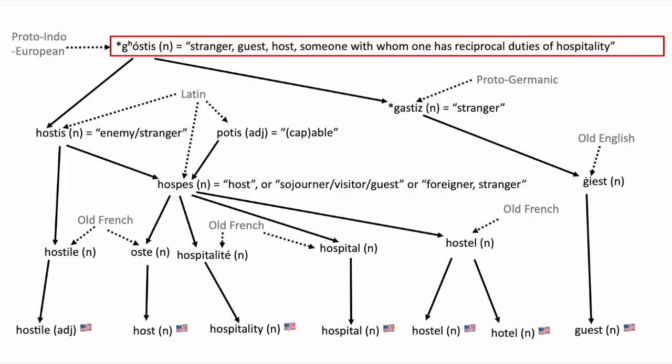So if you go way back past French, past Latin, and way back to what's called Proto-Indo-European, which English is descended from, and which was spoken roughly 5,000 years ago in Eastern Europe, then you get the root word chostis, which host, hostel, and guest, and many other words actually, are all descended from.